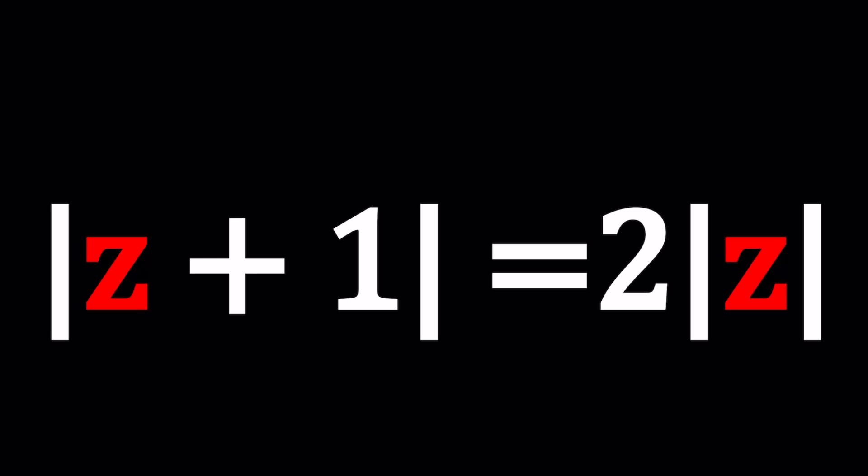So one method that would probably not work well with this problem is guess and check. There are infinitely many possibilities. So the probability of guessing it and getting it right is zero because one over infinity, right? Let's not do that. That's not efficient at all. It's actually crazy. Instead, let's do something more meaningful.